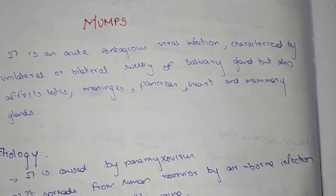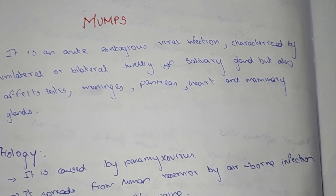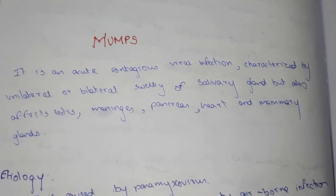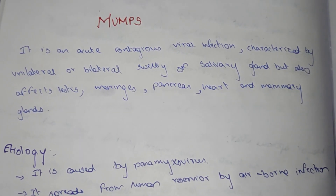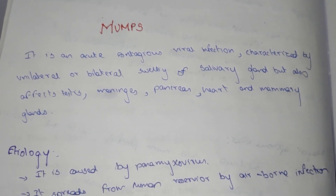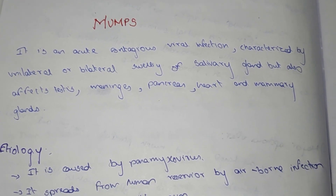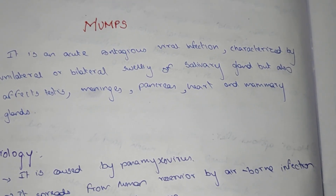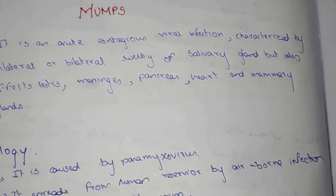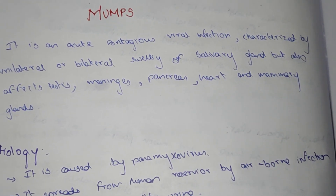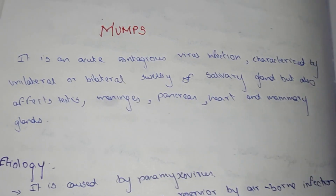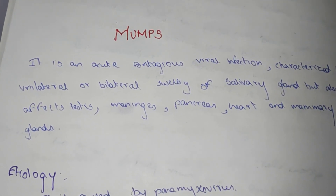Mumps is an acute contagious viral infection, characterized by unilateral or bilateral swelling of the salivary glands, but also affects the testes, mammary glands, pancreas, and heart.